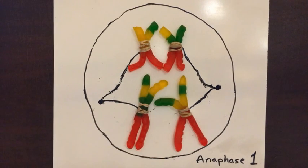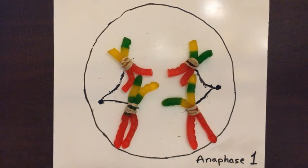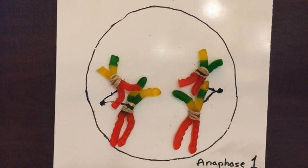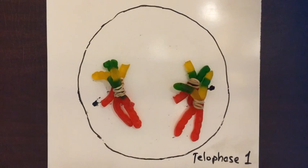The next phase, anaphase, is when the spindle fibers separate the chromosome pairs and pull them towards the centrioles, but sister chromatids are still connected with the centromere.